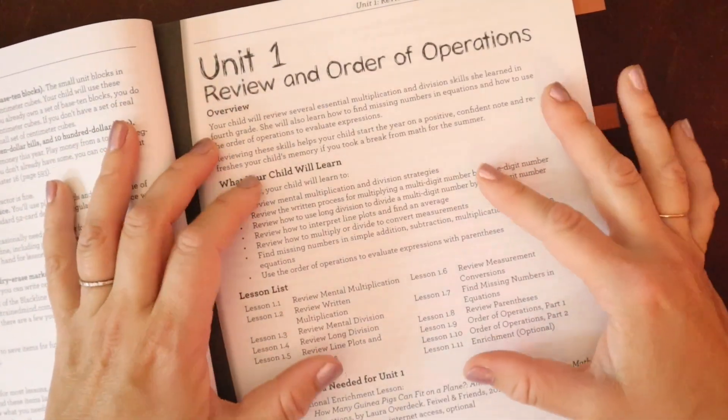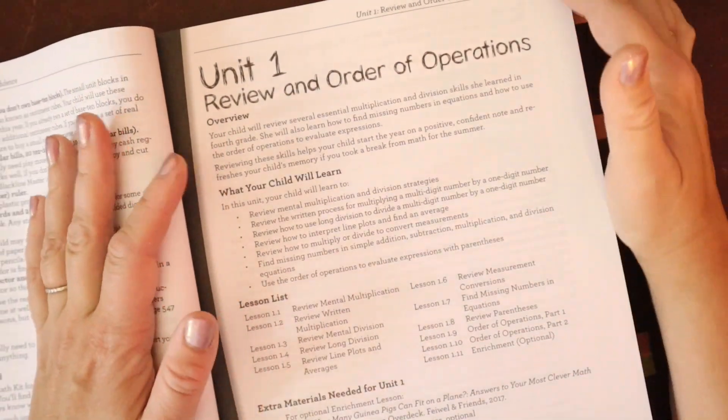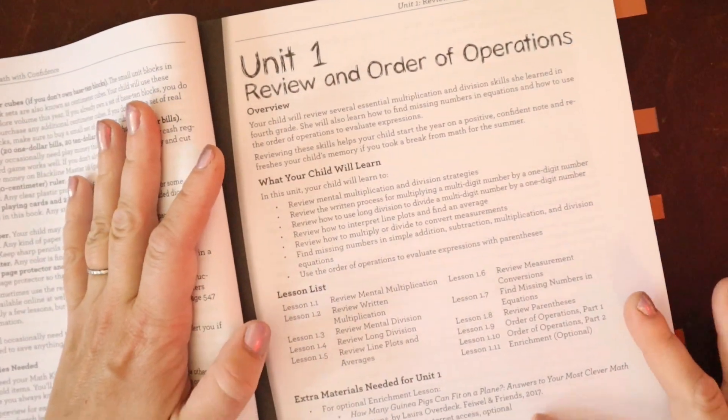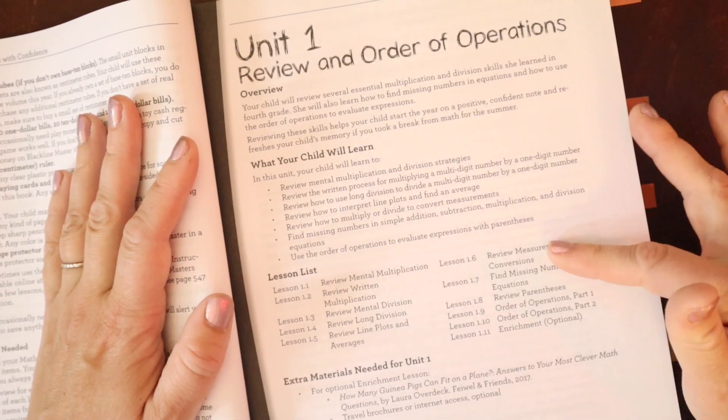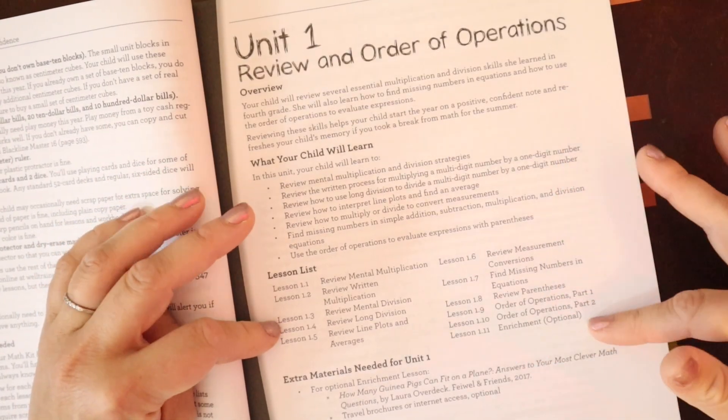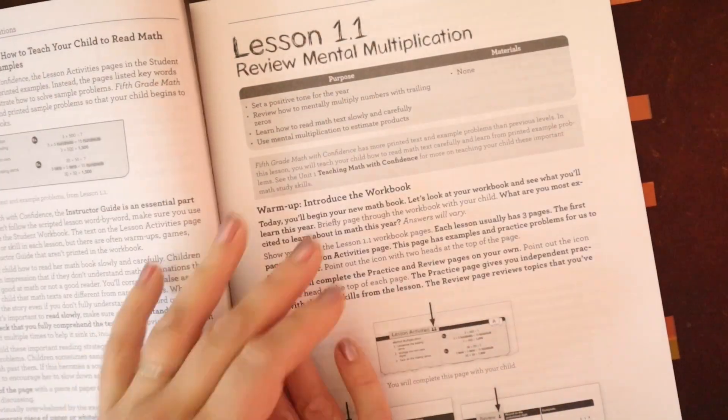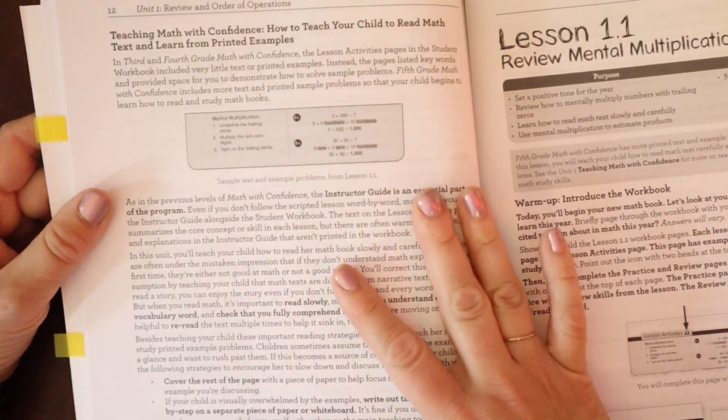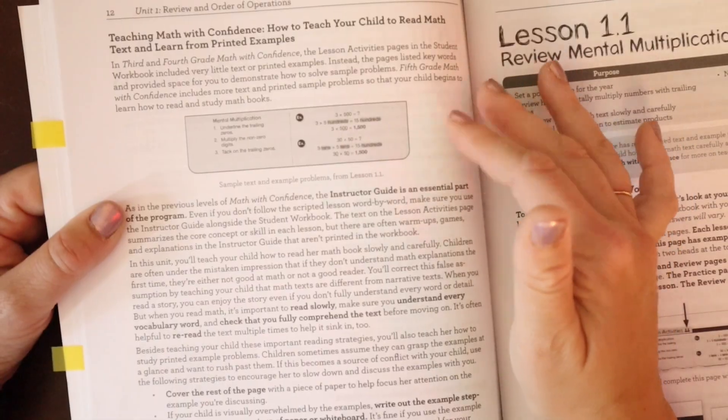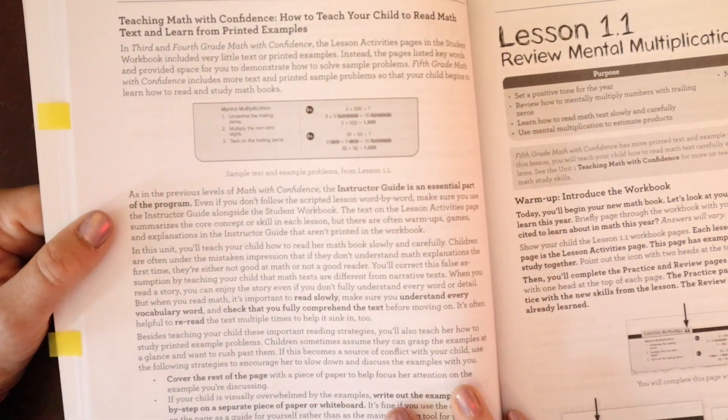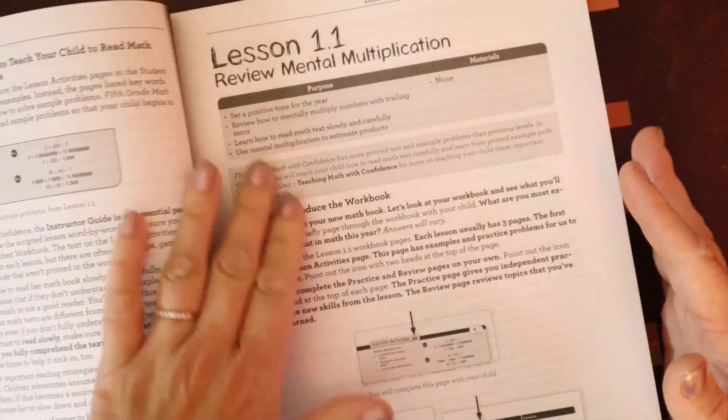So then we jump into unit one. All of the Math with Confidence programs start with a little bit of review and then start adding on work after that. So all of the units are also developed the same way. We have this overview of what this unit is going to be, what your child is going to learn, the different lessons. So this unit has 11 lessons when you include the enrichment lesson, and then extra materials that you will need for the enrichment lessons. Then we have the page that is the Teaching Math with Confidence, kind of how do you do this page, how to teach your child to read math text and learn from printed examples. Again, I really like that this program includes this kind of breakdown. It is written towards you as a homeschool parent. And then we have our lessons.